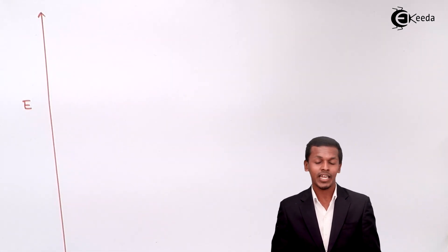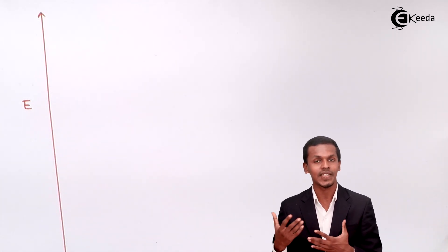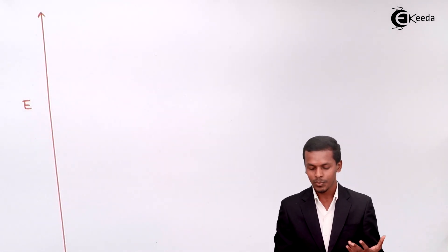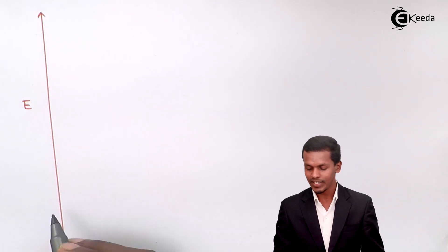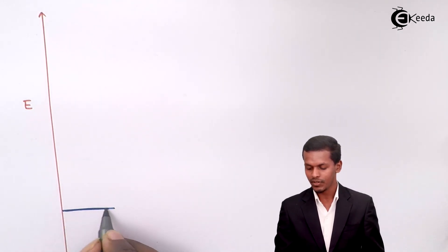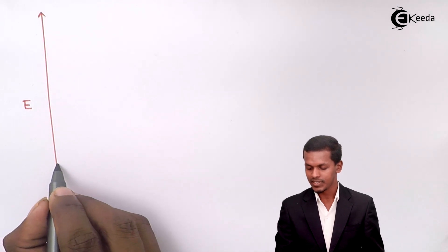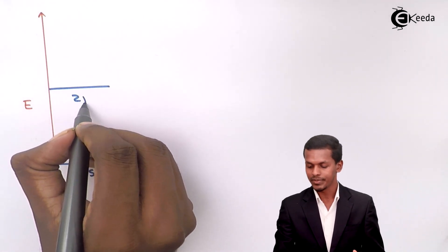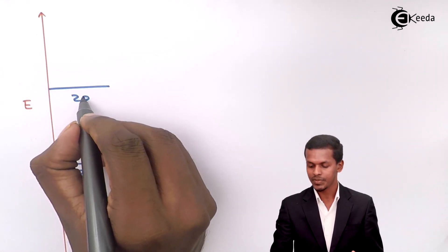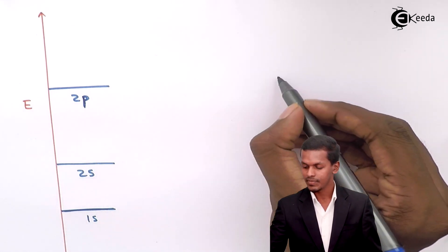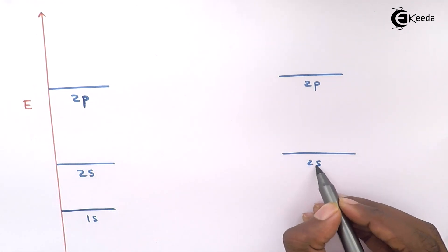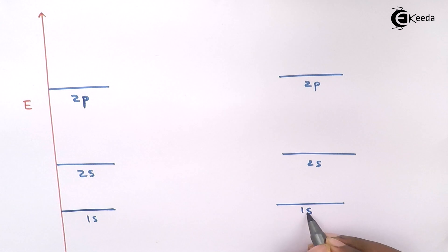This is the energy level diagram I have represented for giving the atomic orbital for nitrogen, as well as it can represent the molecular orbital for the nitrogen molecule. We have three levels: the first is the 1s orbital, the next is the 2s orbital, and ultimately we have the 2p orbital or 2p subshell. Similarly, we can represent the atomic orbitals for the other nitrogen atom at the same energy levels.